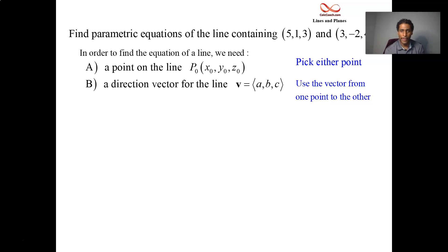Let's find the vector from—call the first guy P, call the second guy Q. From P to Q, we'll do 3 minus 5, minus 2 minus 1, 4 minus 3. We get the vector (-2, -3, 1).